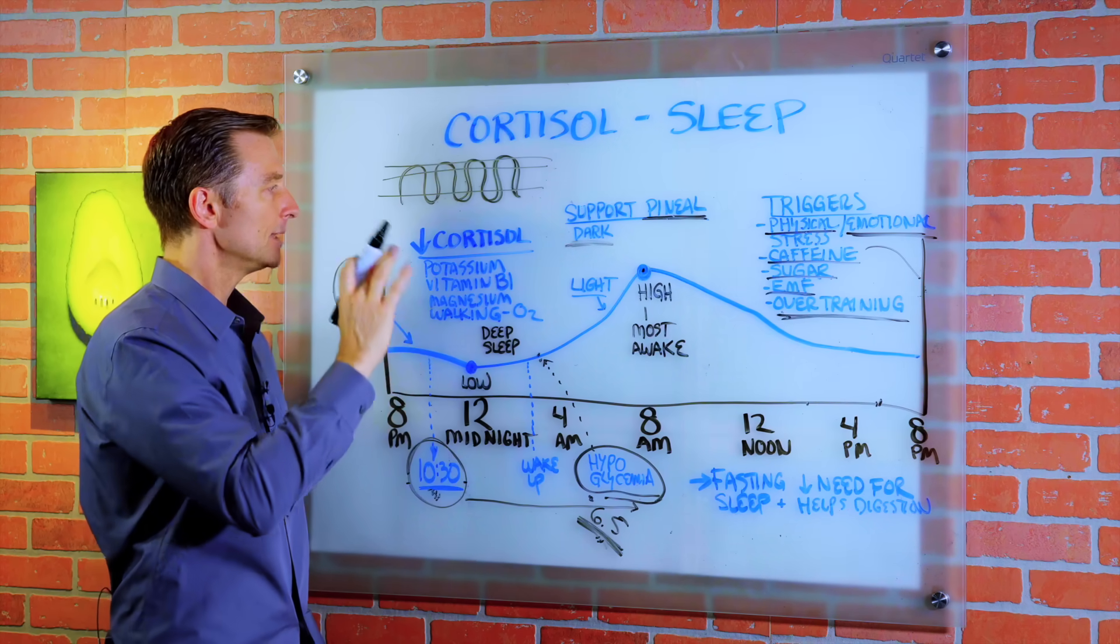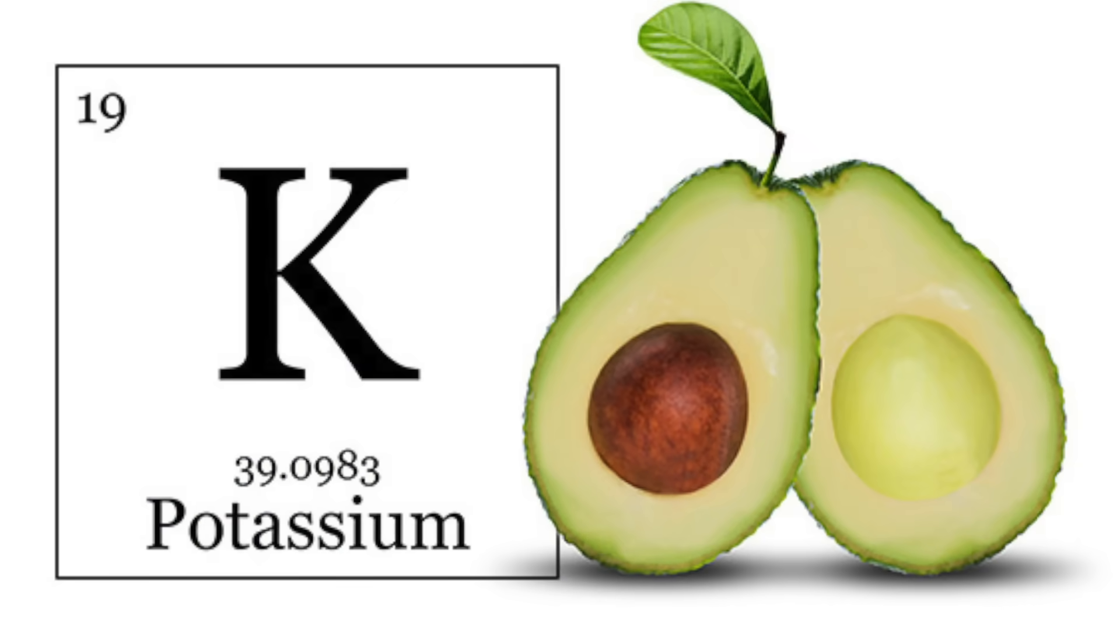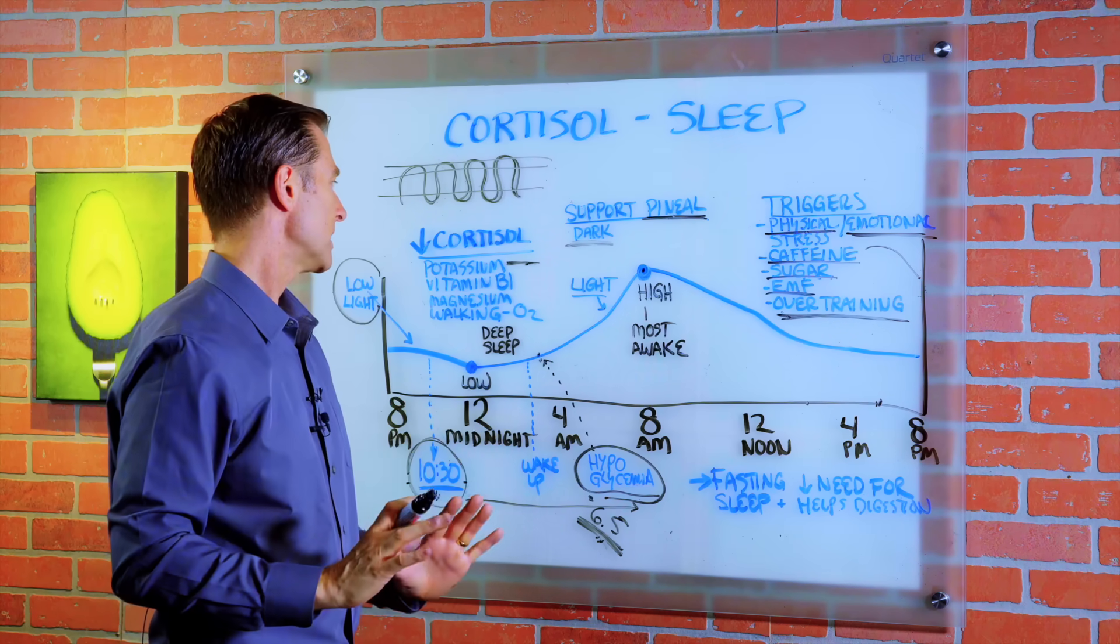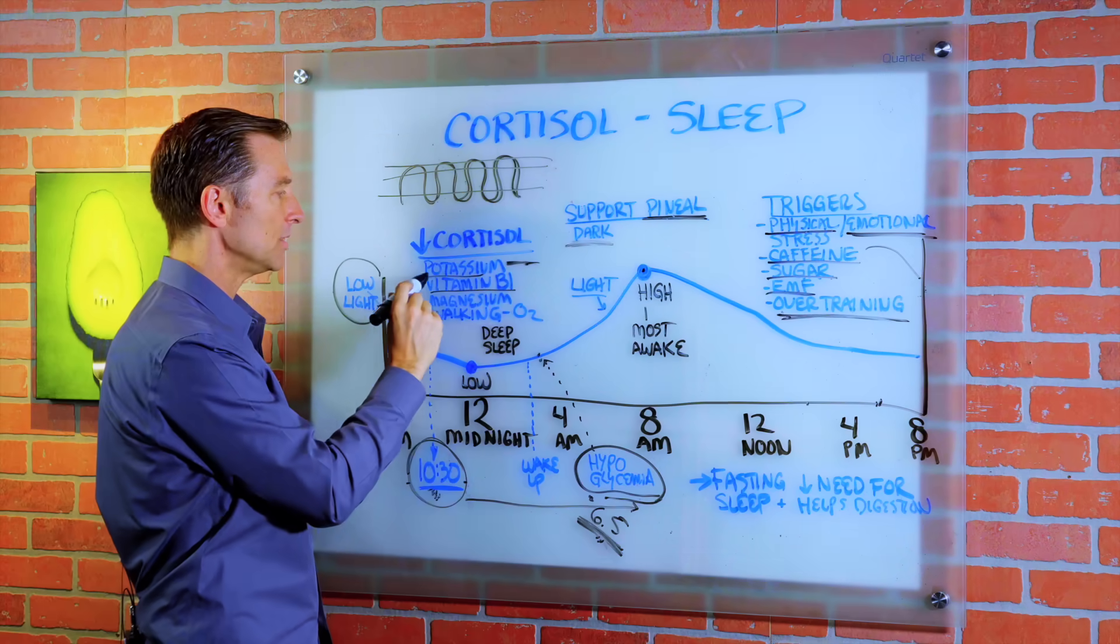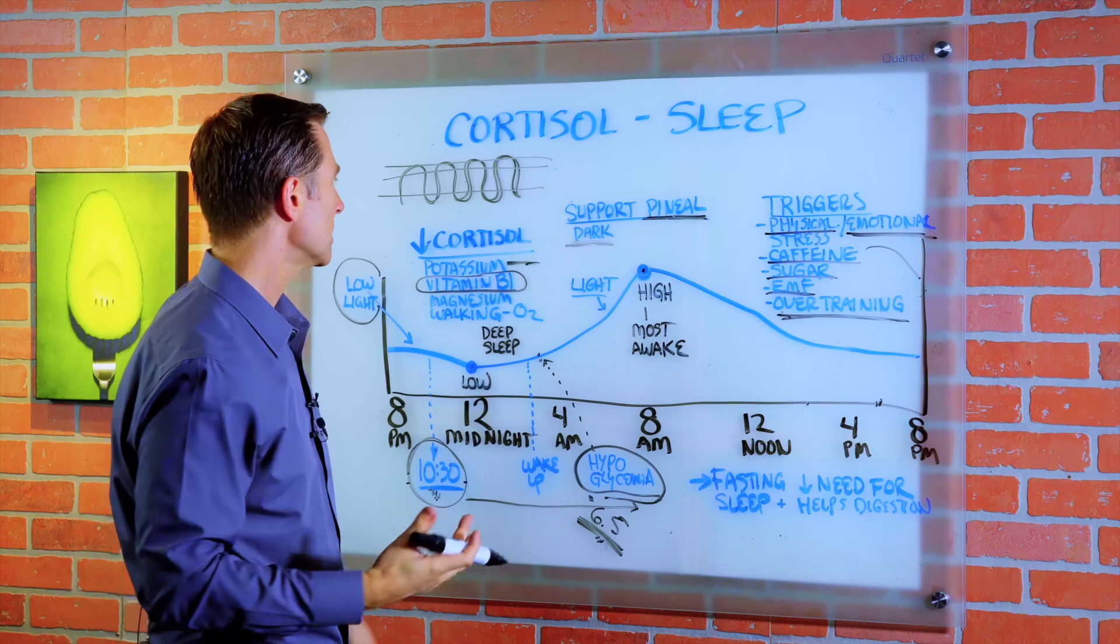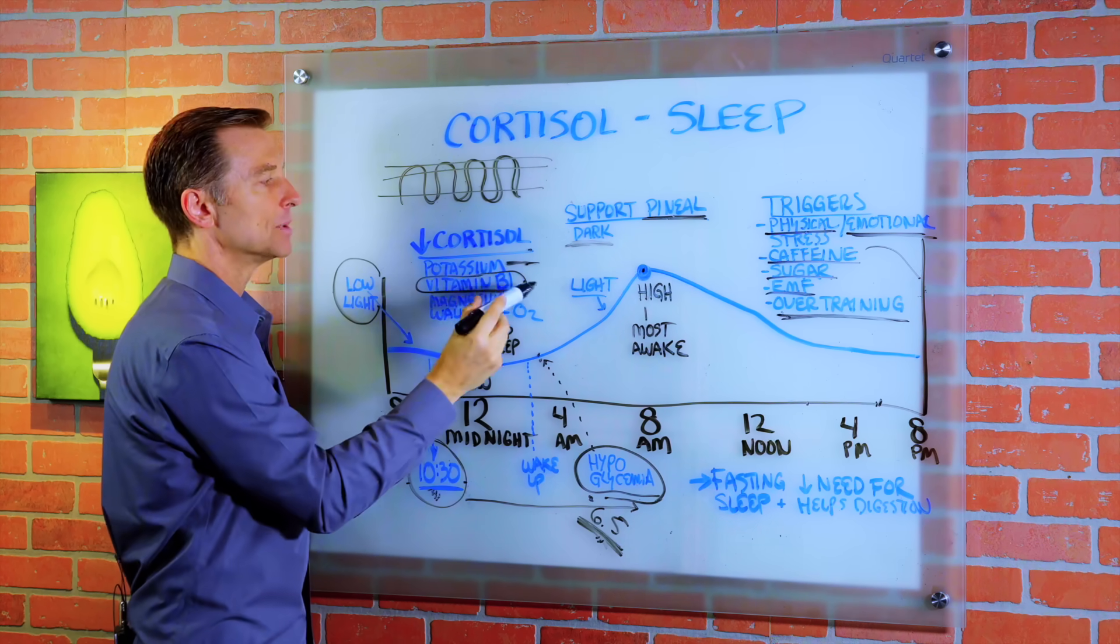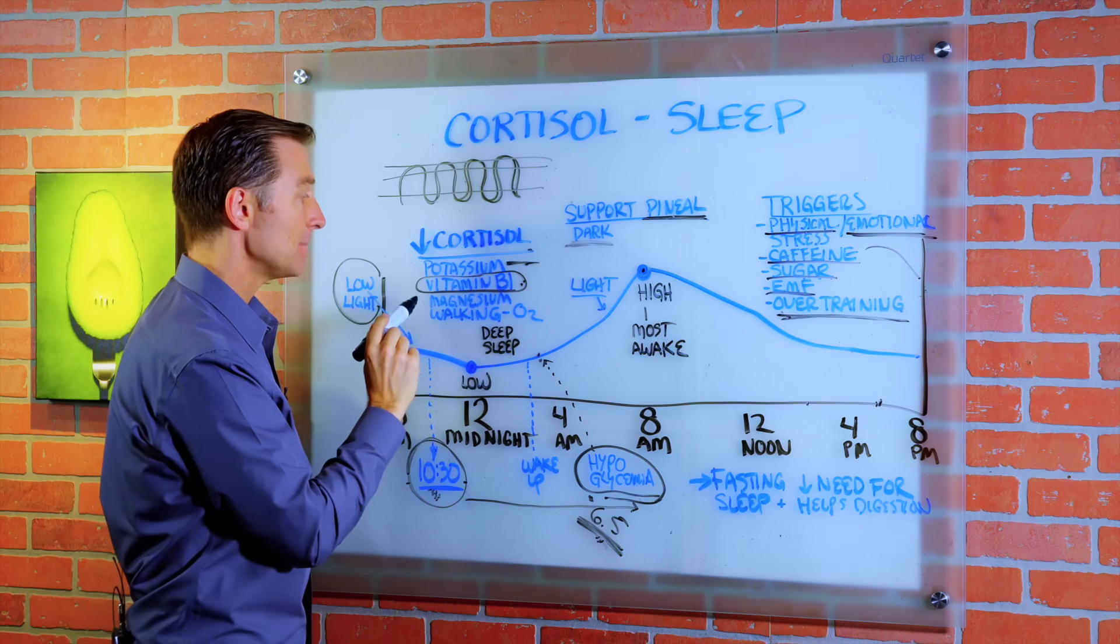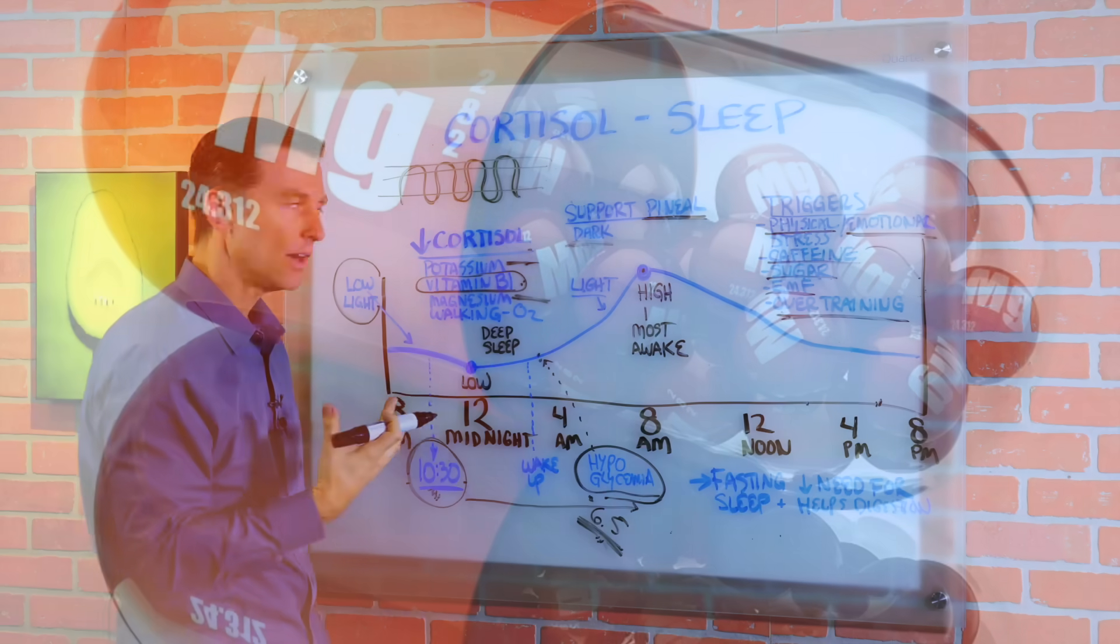There are certain nutrients that you can take to actually reduce cortisol. Potassium is a big one. Make sure that you have enough potassium because potassium is a physiological tranquilizer. It calms the muscles down, the nerves down. And also vitamin B1 is really good to help reduce cortisol. This one right here, you'll feel it within minutes after taking B1. You'll feel the sense of relaxation. But this is a really important one right here because high levels of cortisol deplete your B1. They also deplete your potassium and magnesium too. So magnesium is another one that goes along with potassium that can help calm you down and reduce cortisol.